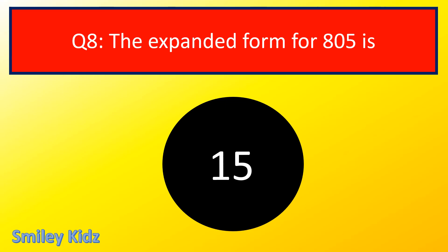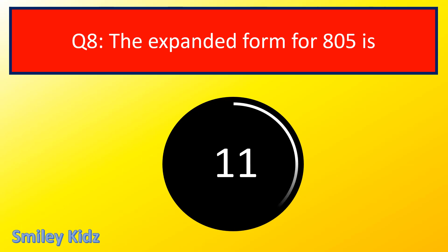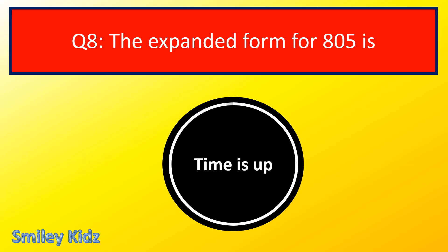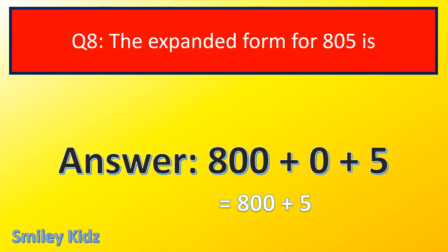Question number 8. The expanded form for 805 is? The right answer is 800 + 0 + 5. The expanded form for 805 is 800 plus 0 plus 5.